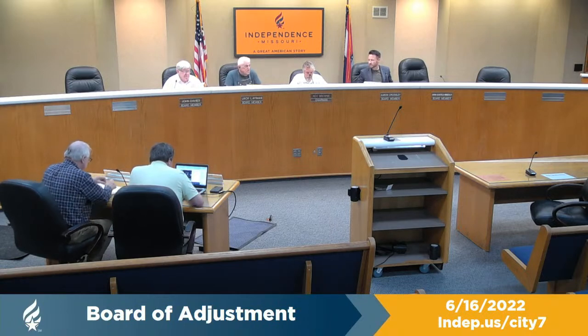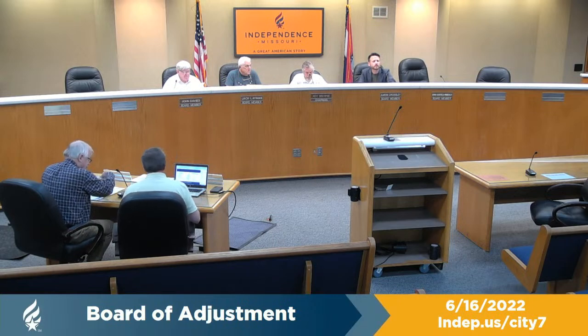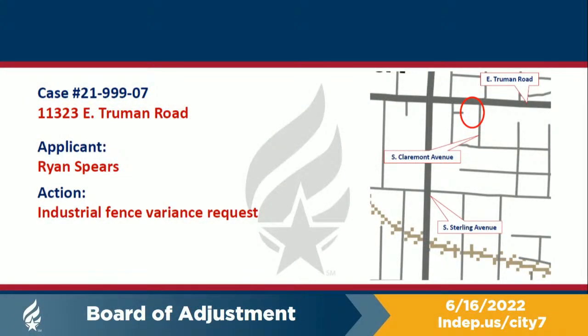Our next case is case number 22-999-07, a variance to the industrial fencing standards for 11323 East Truman Road. The applicant, Ryan Spears of Spears Car Care Center, seeks a variance from the industrial fencing standards for the property at 11323 East Truman Road.